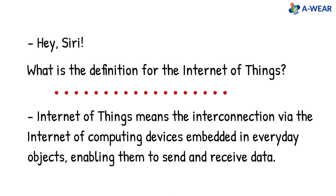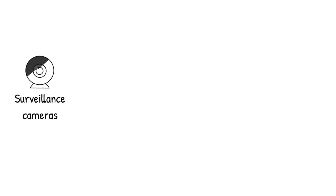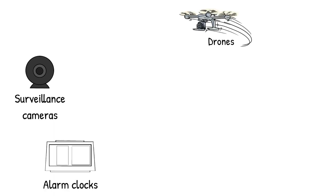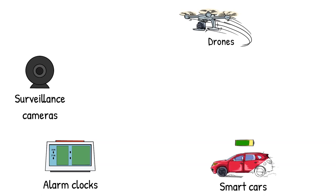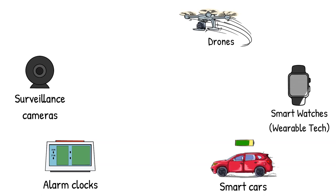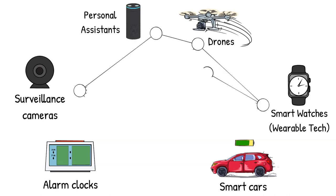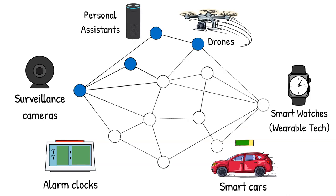Let me put it simply for you. Internet of Things is a system where such things as surveillance cameras, drones, alarm clocks, smart cars, smart watches — which are part of wearable tech — personal assistants and many more are equipped with sensors connected to the network, with the ability to exchange data with a server and also among each other.